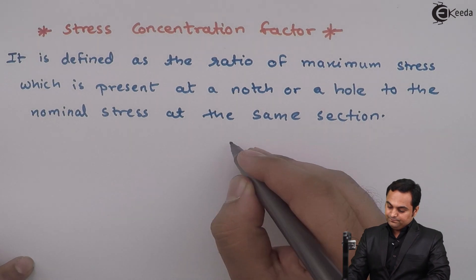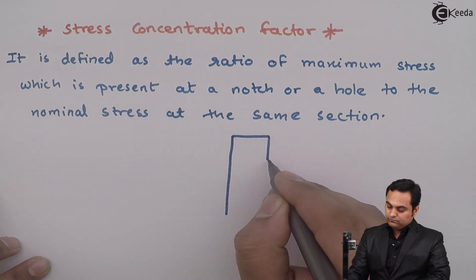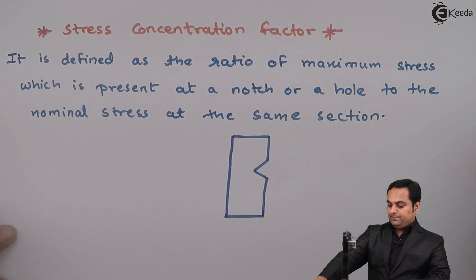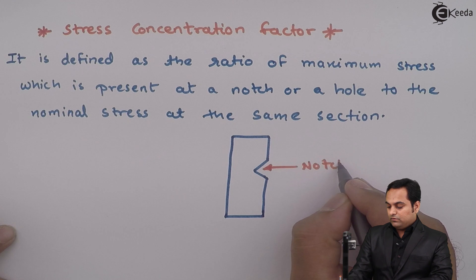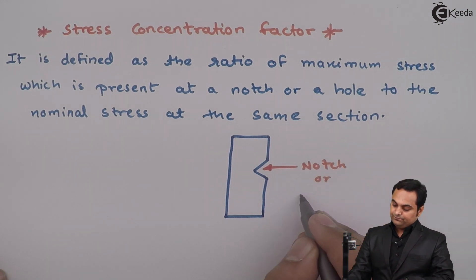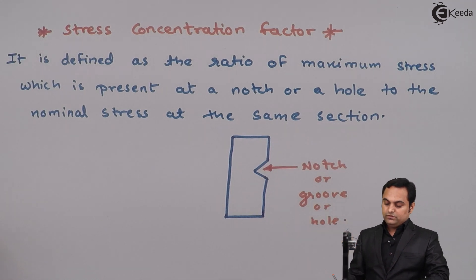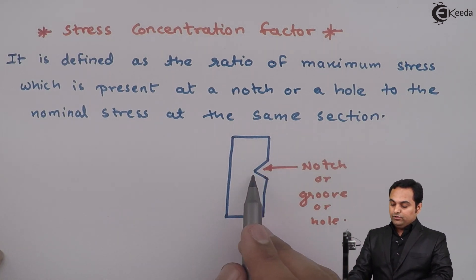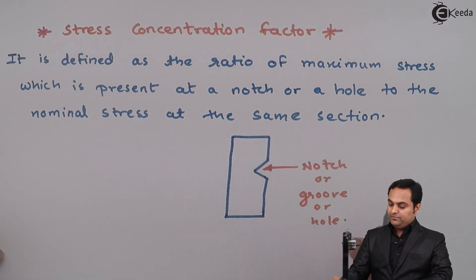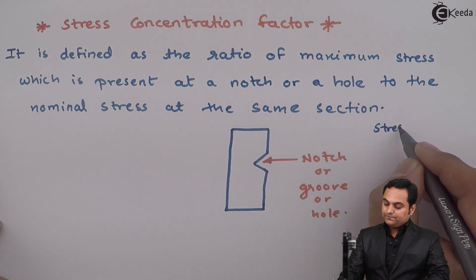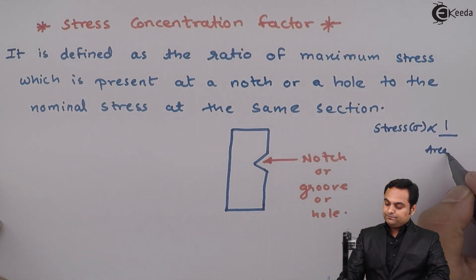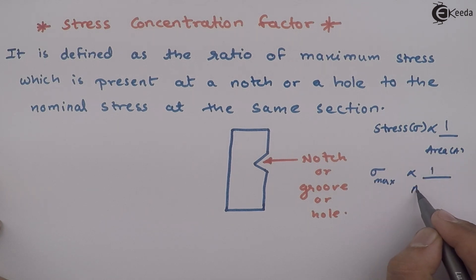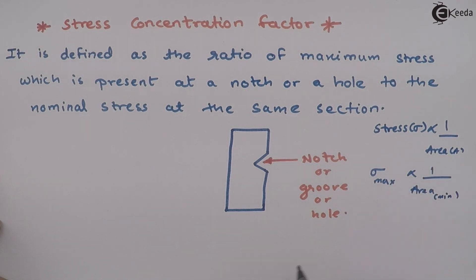For this we need a diagram. In this diagram we have a notch — also called a groove or a hole. At the notch area, the cross-sectional area goes on decreasing, so the area is minimum there. Since stress is inversely proportional to area, stress will be maximum where the area is minimum.